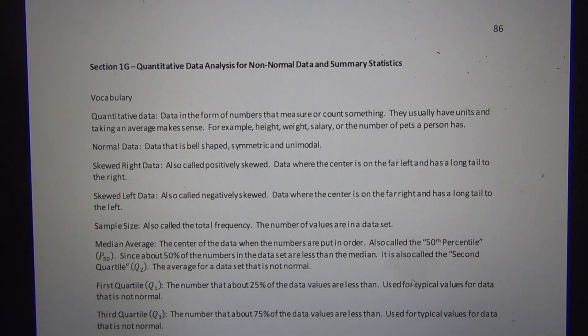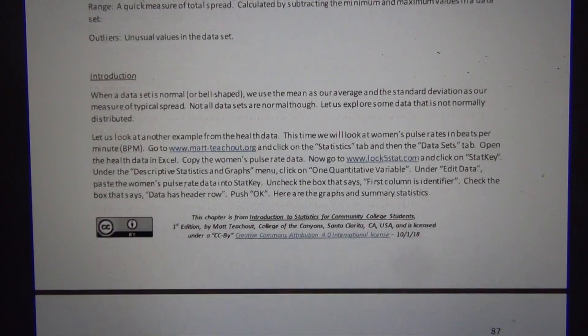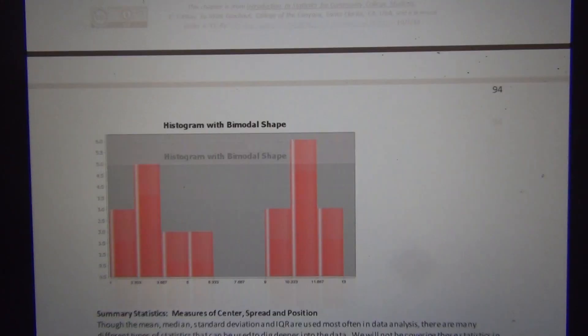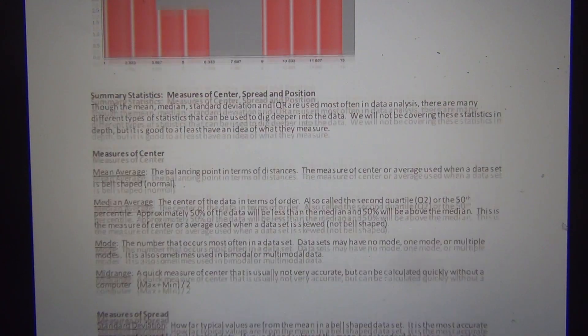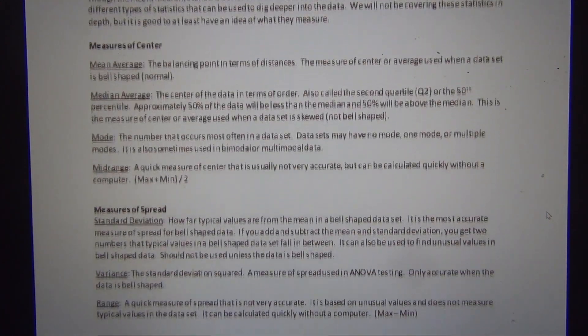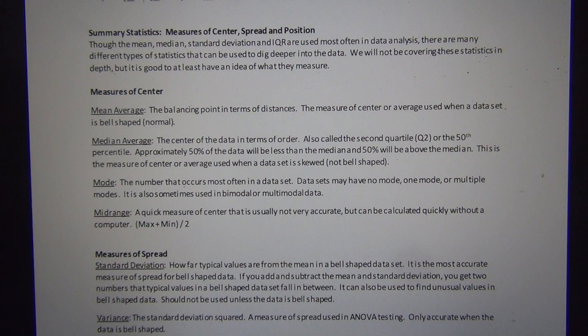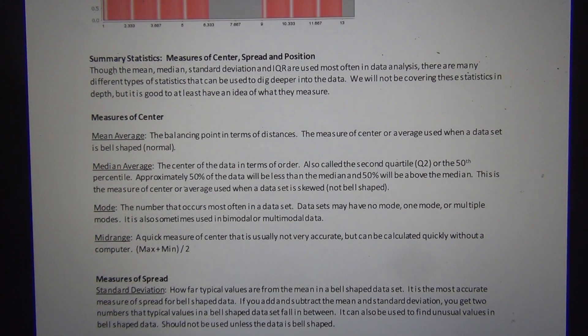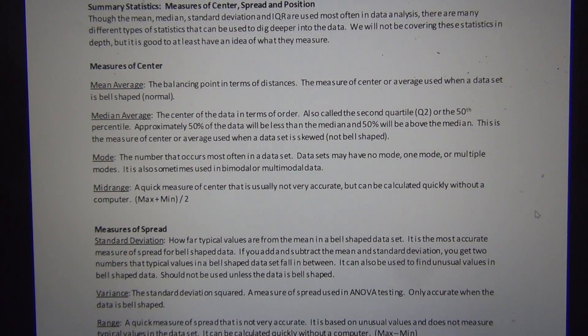This was on looking at some of the summary statistics that we use in quantitative data. If I go ahead and open up 1G and scroll down to almost the end of the section, it's on page 94 and it says summary statistics. This is just a list of some common statistics that you find in quantitative data.